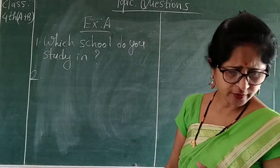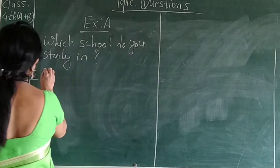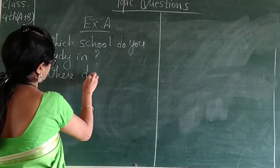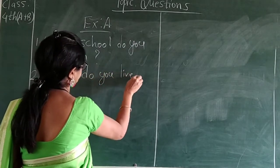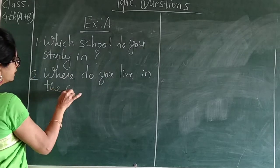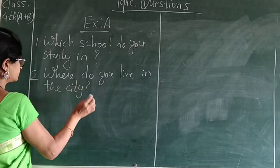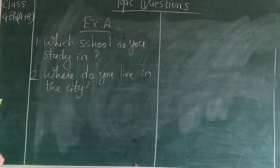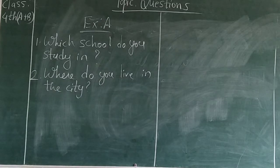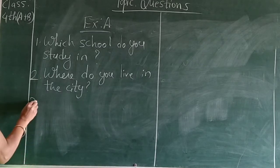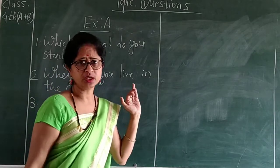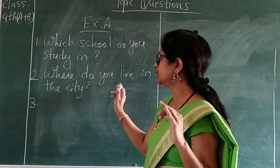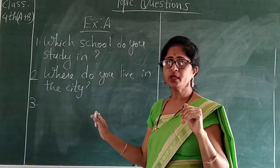The second question is: Where do you live in the city? You have to answer where you live. For example, I live in Ganesh Nagar in Gondhya. So this is the example — you have to write your own address.